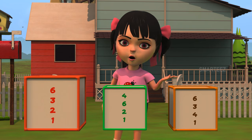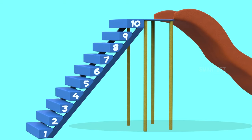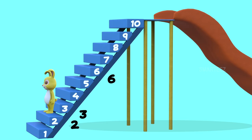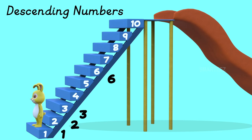Let's take a look. The bunny jumped from step 6 to step 3, then from step 3 to step 2, and finally from step 2 to step 1. So, the numbers went 6, 3, 2, 1. Since the numbers are going down, we call them descending numbers.